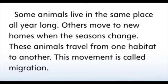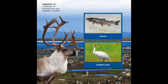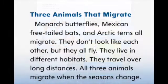Migration is the movement of animals from one habitat to another. Three animals that migrate are monarch butterflies, Mexican free-tailed bats, and arctic terns. They don't look like each other, but they all fly. They live in different habitats and travel over long distances. All three animals migrate when the seasons change.